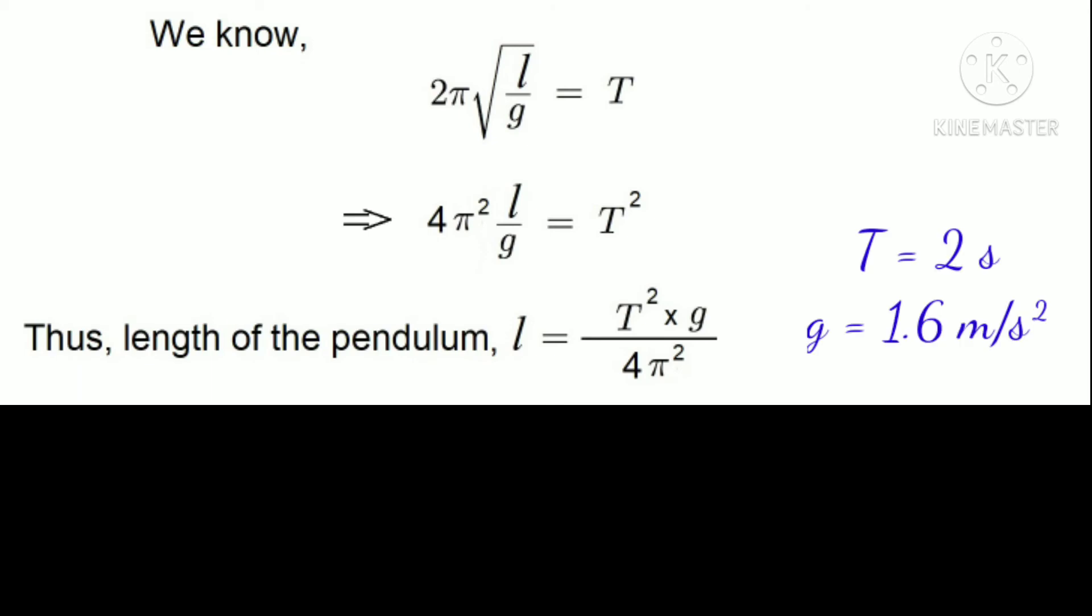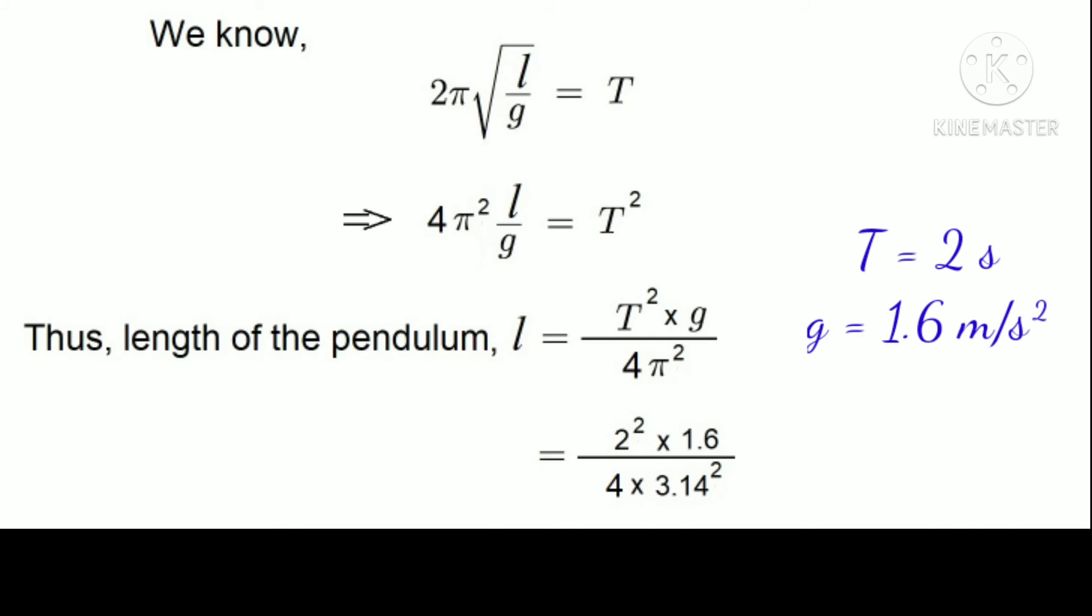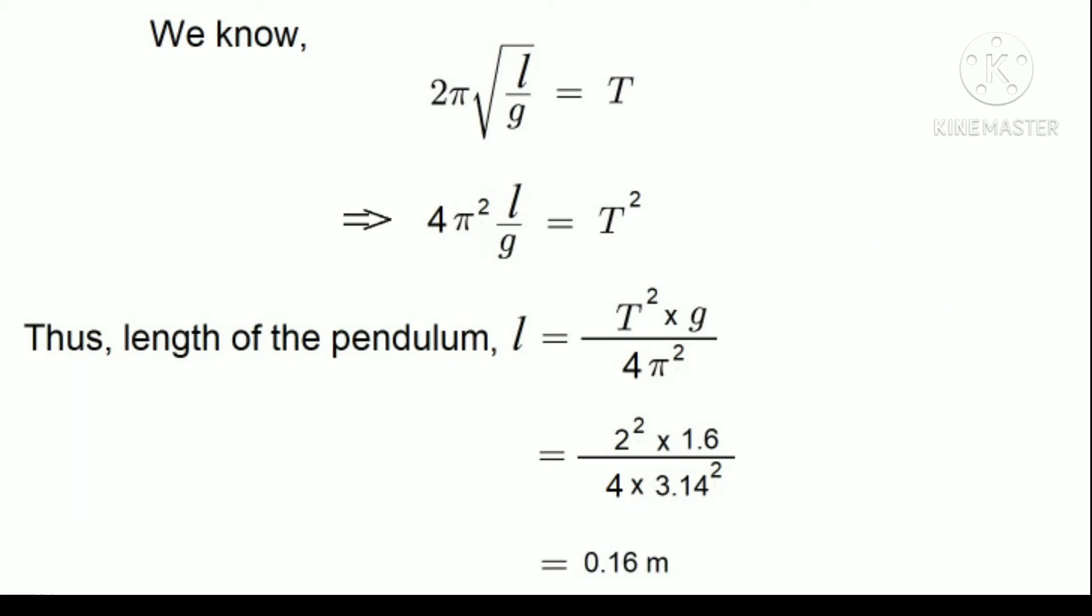On substituting the values we get 2 squared times 1.6 divided by 4 times 3.14 squared, which is equal to 0.16 meter.